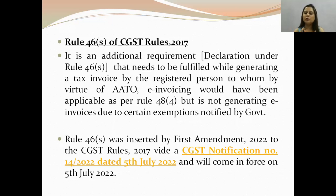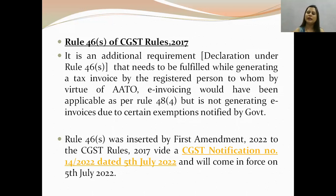As you all know, e-invoicing is applicable when your turnover is more than 20 crore. So you have to make an e-invoice. Now, there are taxpayers for whom e-invoicing is applicable — meaning their turnover is above 20 crore — but they don't generate e-invoices. Why? Because they are in the exemption category.